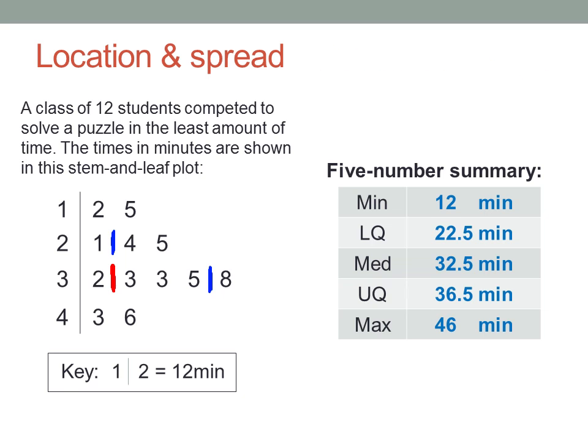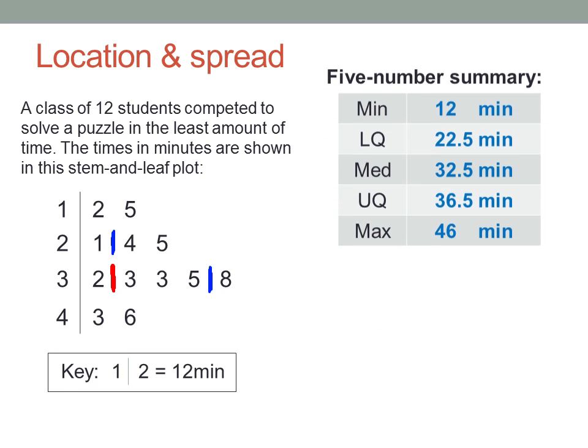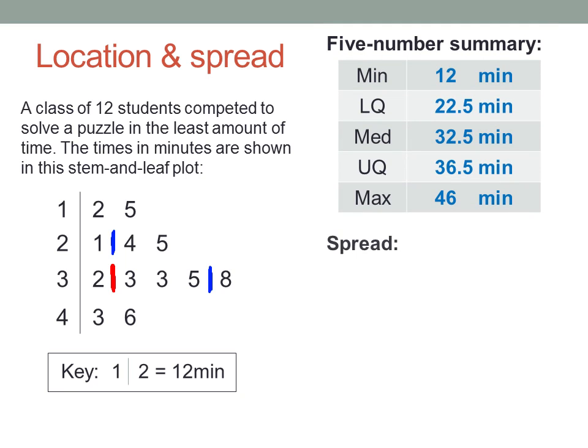Having worked out the five-number summary, we can also then calculate two simple measures of the spread of the data. The range is the difference between the lowest and highest data values, here forty-six minus twelve, which is thirty-four minutes.